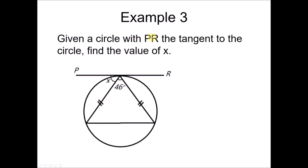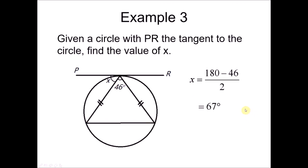Last example: given a circle with PR as the tangent, find the value of X, where X is the angle between the chord and the tangent. This angle equals the corresponding angle in the alternate segment, and we can label those angles as X. The triangle formed is an isosceles triangle, so its two base angles are equal. Using the total of 180 degrees: X equals (180 minus 46) divided by 2, giving X equals 67 degrees.